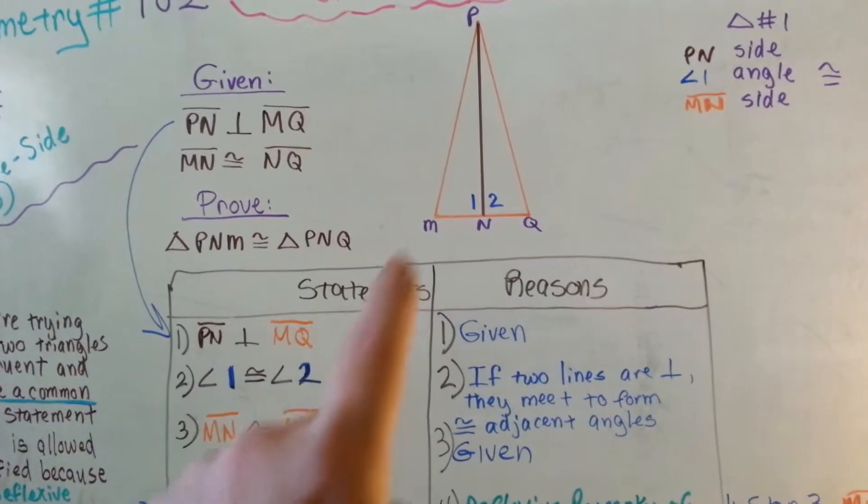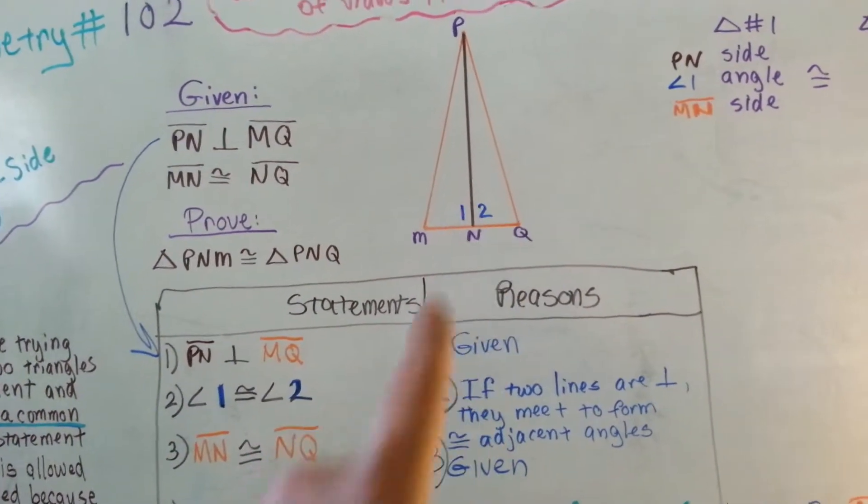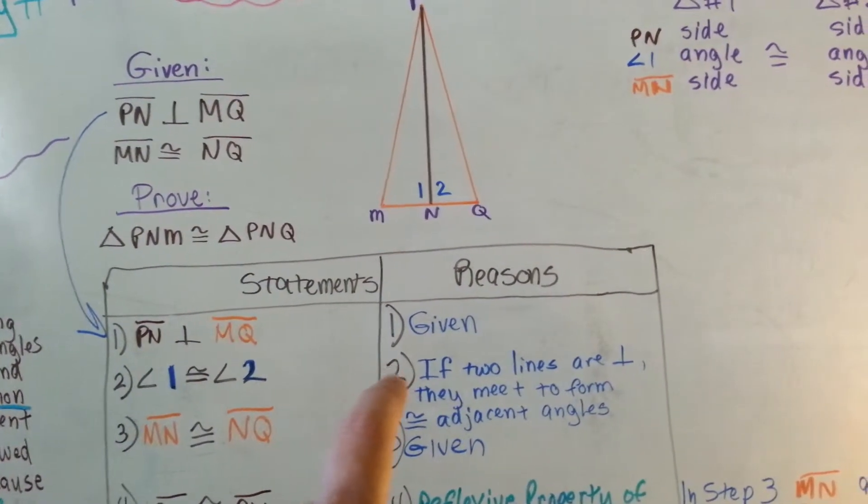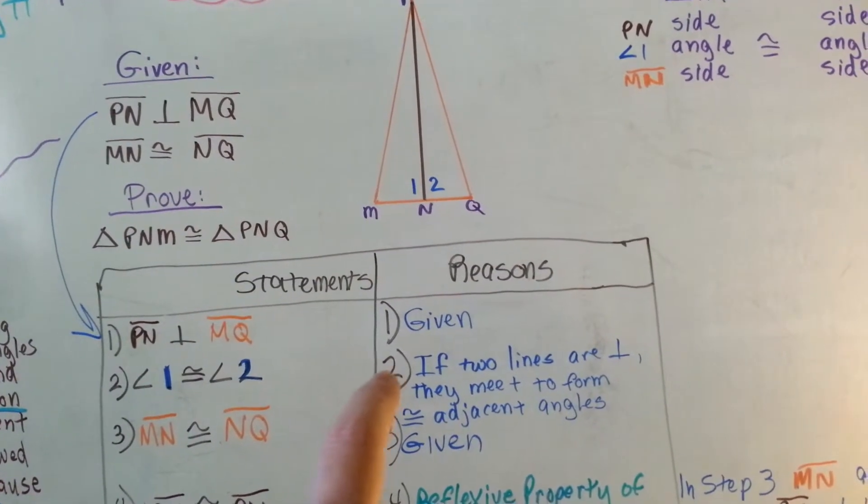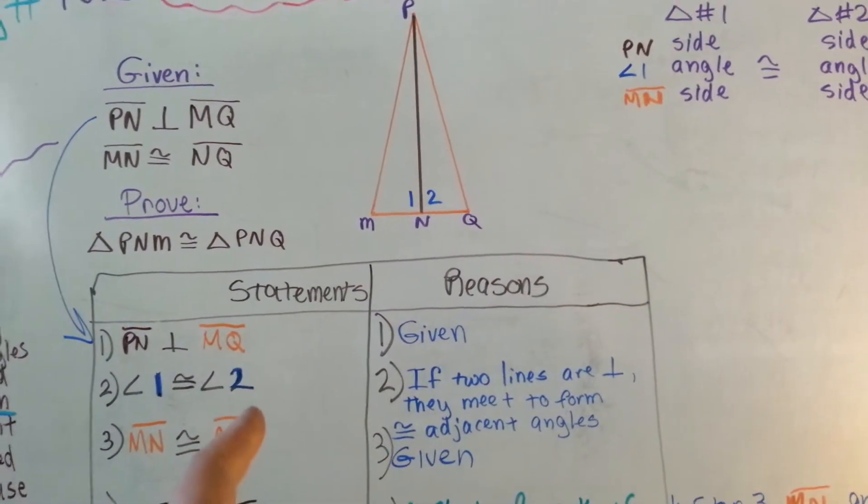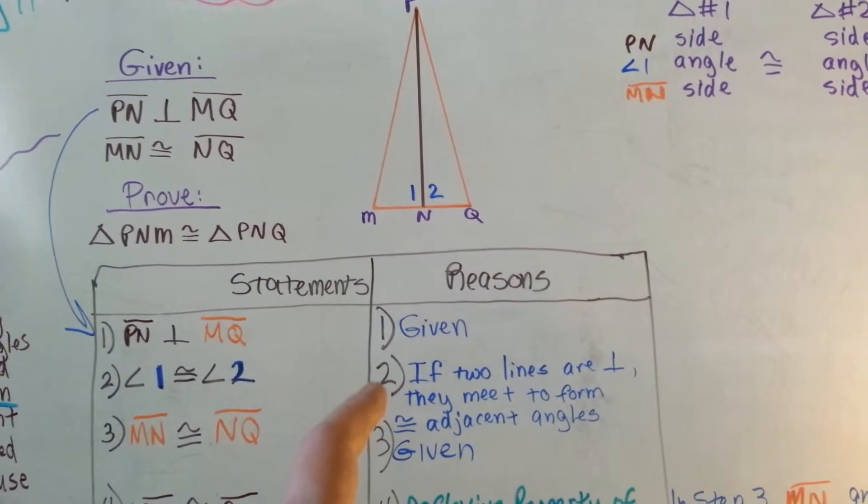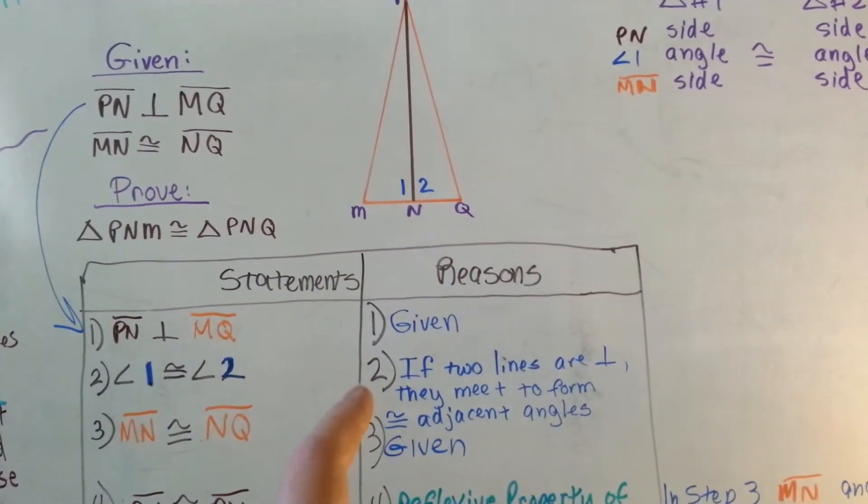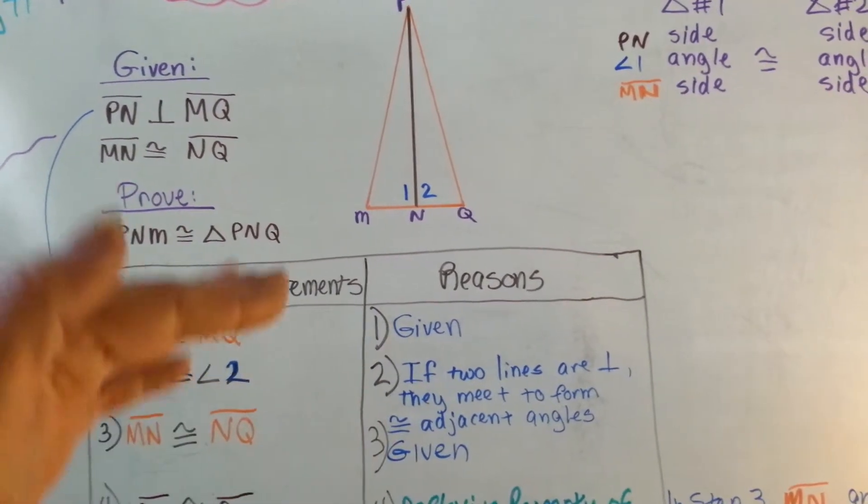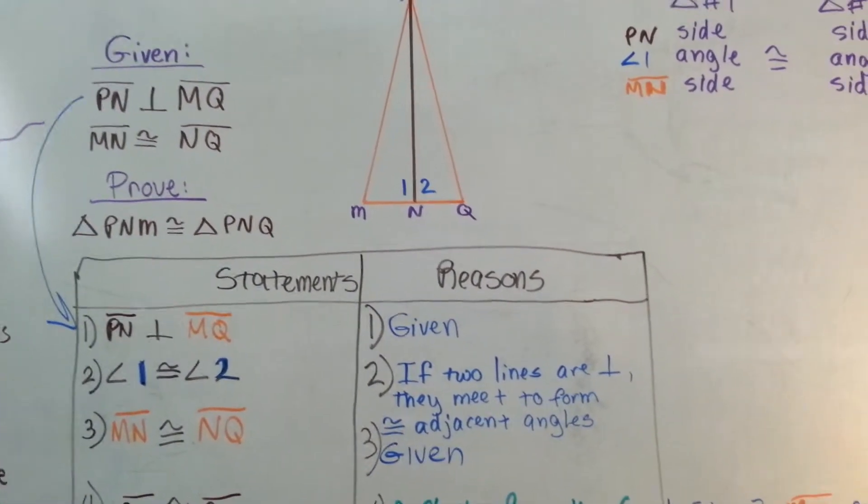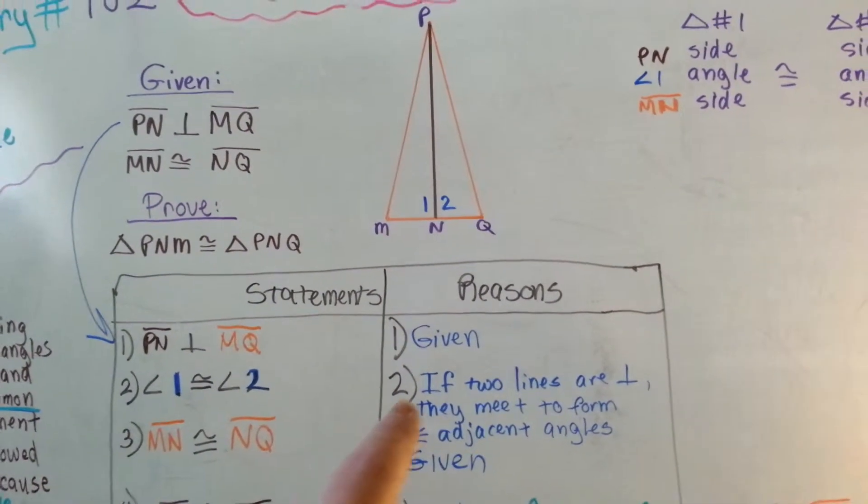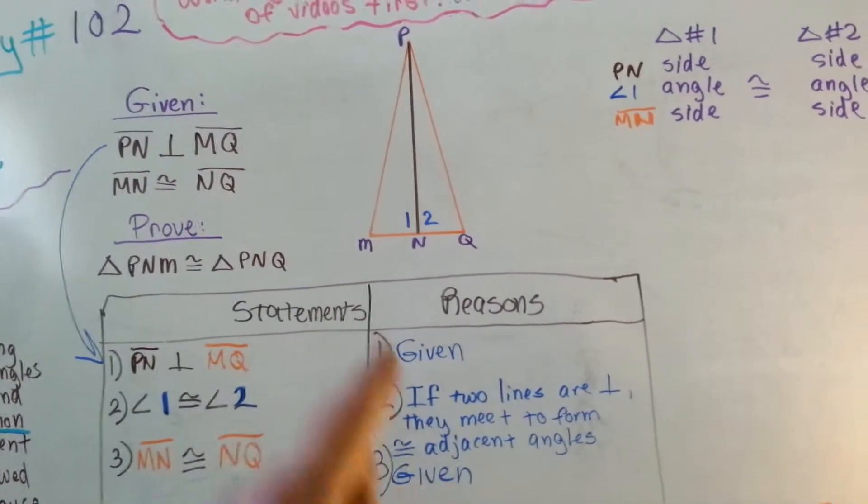We also put that angle one and angle two are congruent because they are right. Our reasoning is if two lines are perpendicular, they meet to form congruent adjacent angles. That is something we covered earlier when we were talking about perpendicular lines, and you can find the theorem or postulate for it if you look in your list of theorems and postulates in the back of your book.